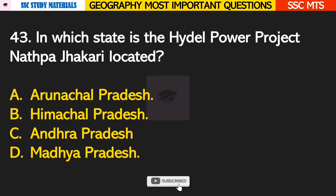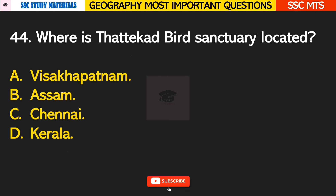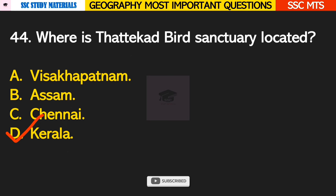Question number 43: in which state is the Natpa-Jhakri Hydel Power Project located? Answer B — it is located in Himachal Pradesh. Question number 44: where is Thattekad Bird Sanctuary located? Answer D — it is located in Kerala.